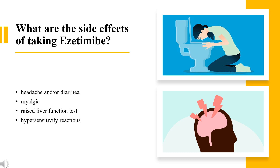Rarely, in less than 0.1% of patients, hypersensitivity reactions, rash, angioedema, or myopathy may occur. Cases of muscle problems, including myalgia and rhabdomyolysis, have been reported and are included as warnings on the label for ezetimibe. Since NPC1L1 also regulates vitamin K uptake, the use of ezetimibe can lead to side effects in warfarin therapy.